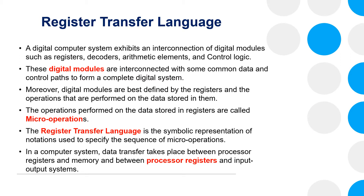A digital computer system exhibits an interconnection of digital modules such as registers, decoders, arithmetic elements, and control logic. These digital modules are interconnected with some common data and control paths to form a complete digital system. Moreover, digital modules are best defined by the registers and the operations that are performed on the data stored in them.